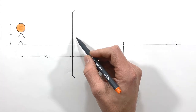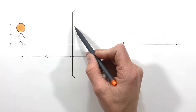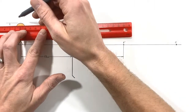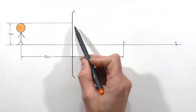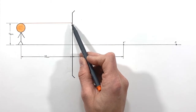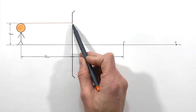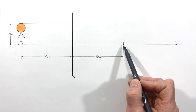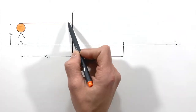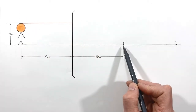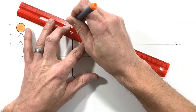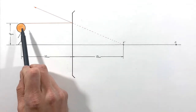Starting with our ray tracing diagram, we're going to draw three incident rays from the object toward the mirror, just like we would with a concave mirror, except now we're dealing with a convex mirror. The first is the principal ray, which strikes the mirror here. Typically the principal ray bounces through the focal point, but our focal point is behind the mirror, so the ray bounces off as though it passed through the focal point.